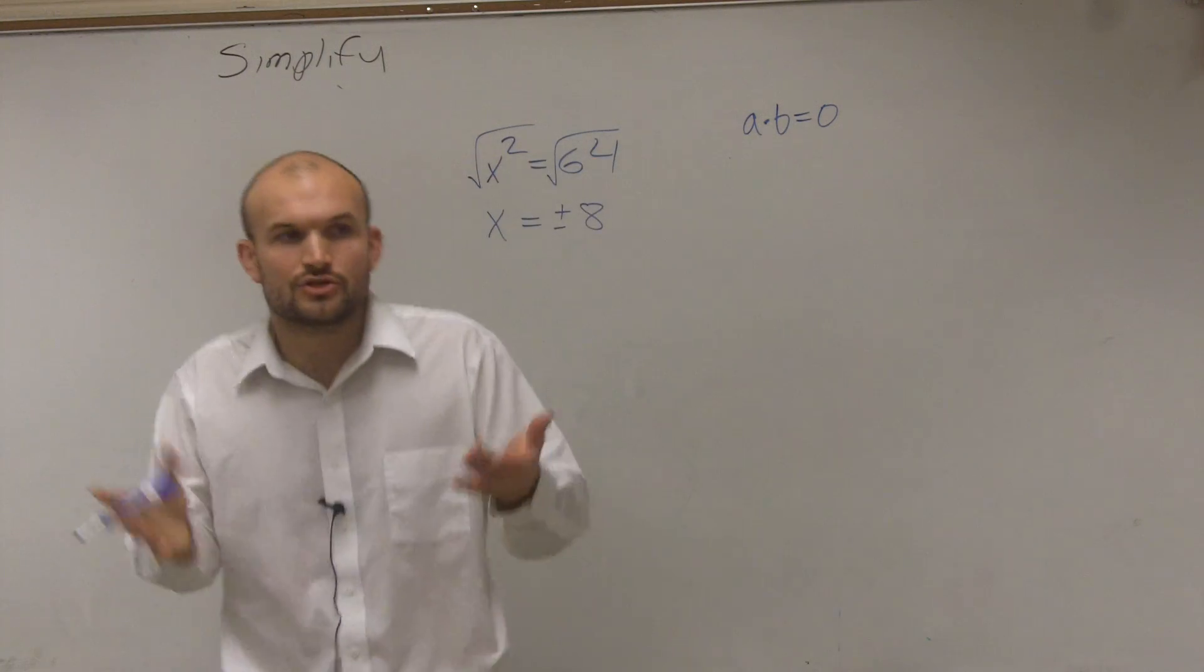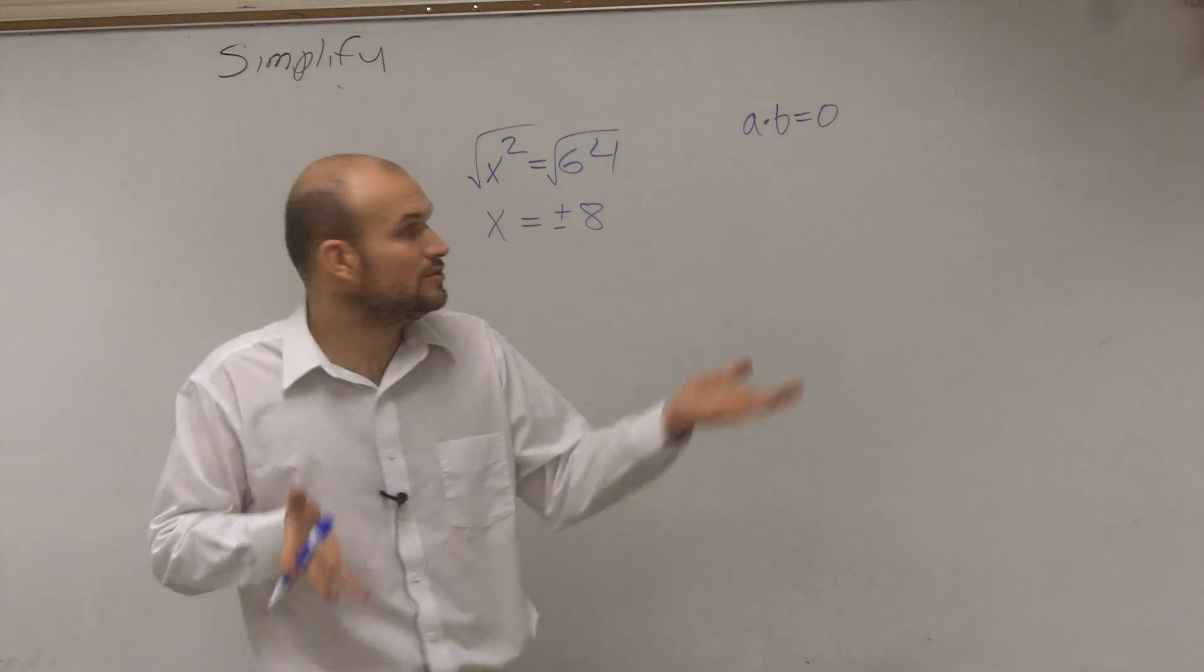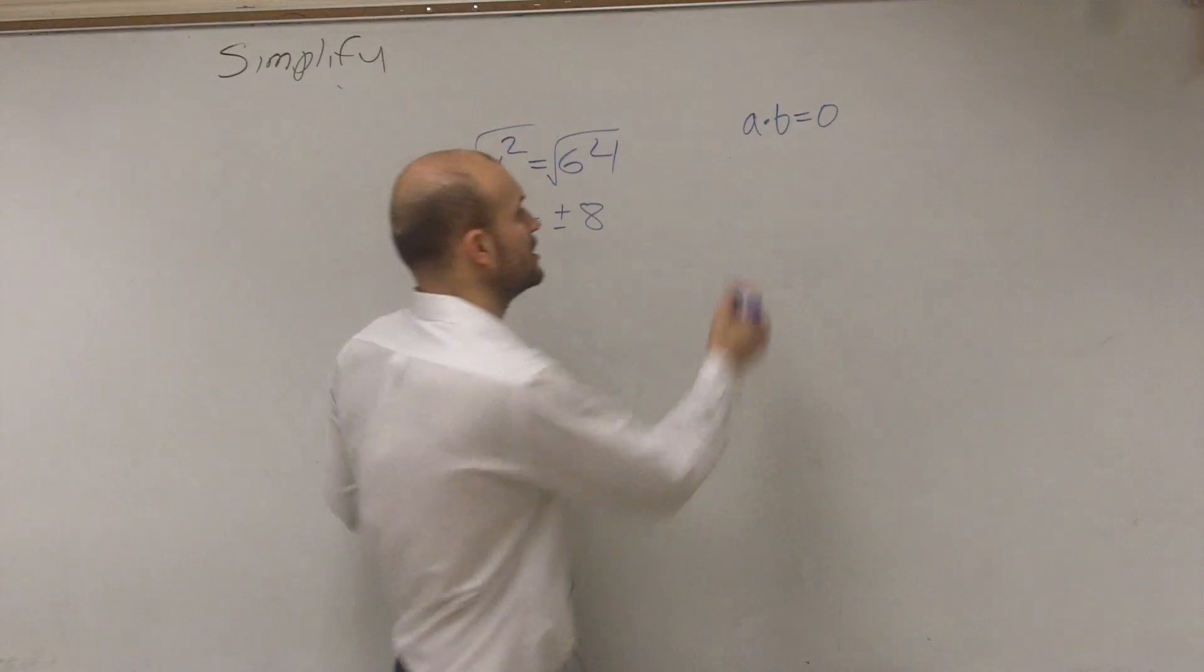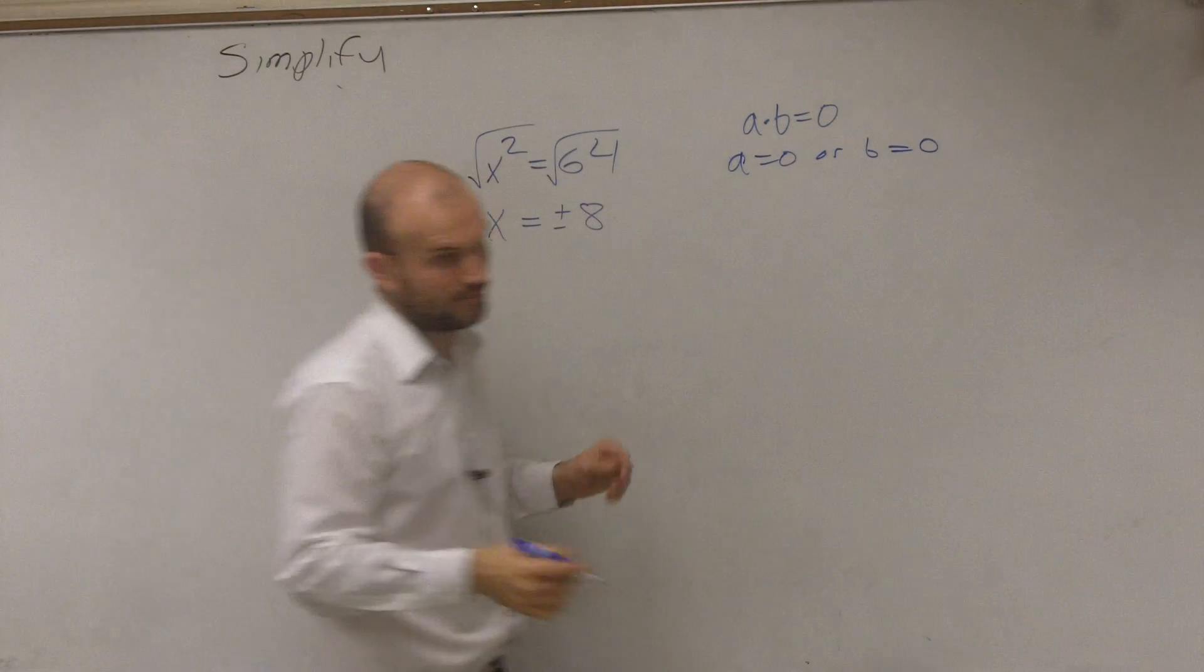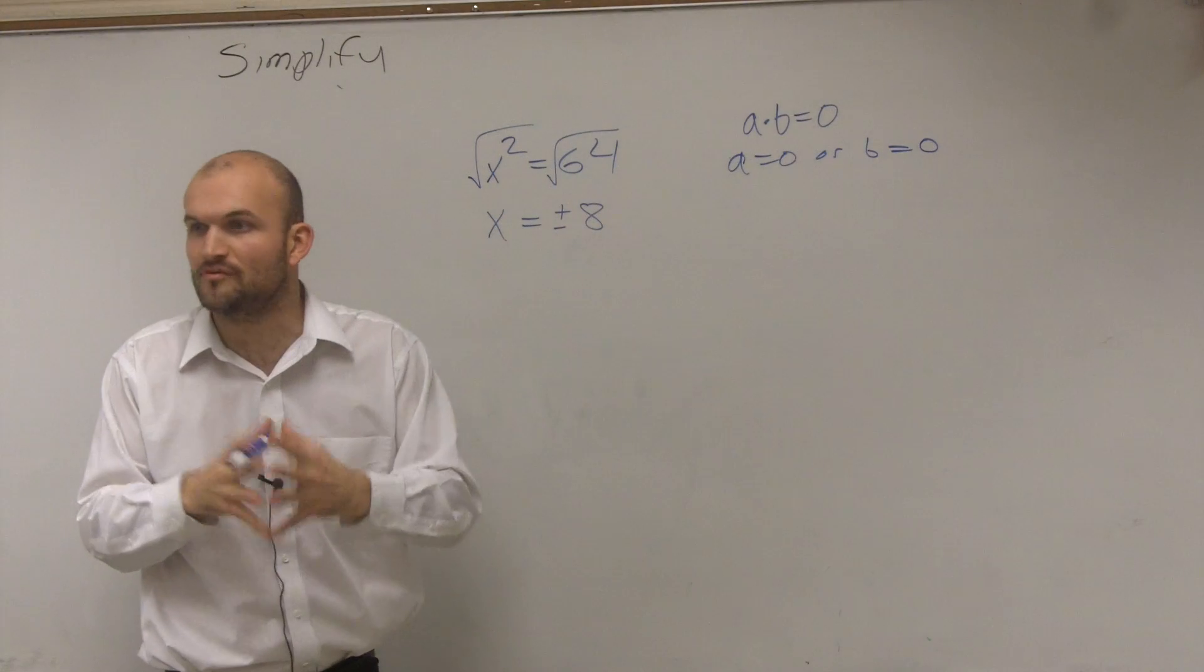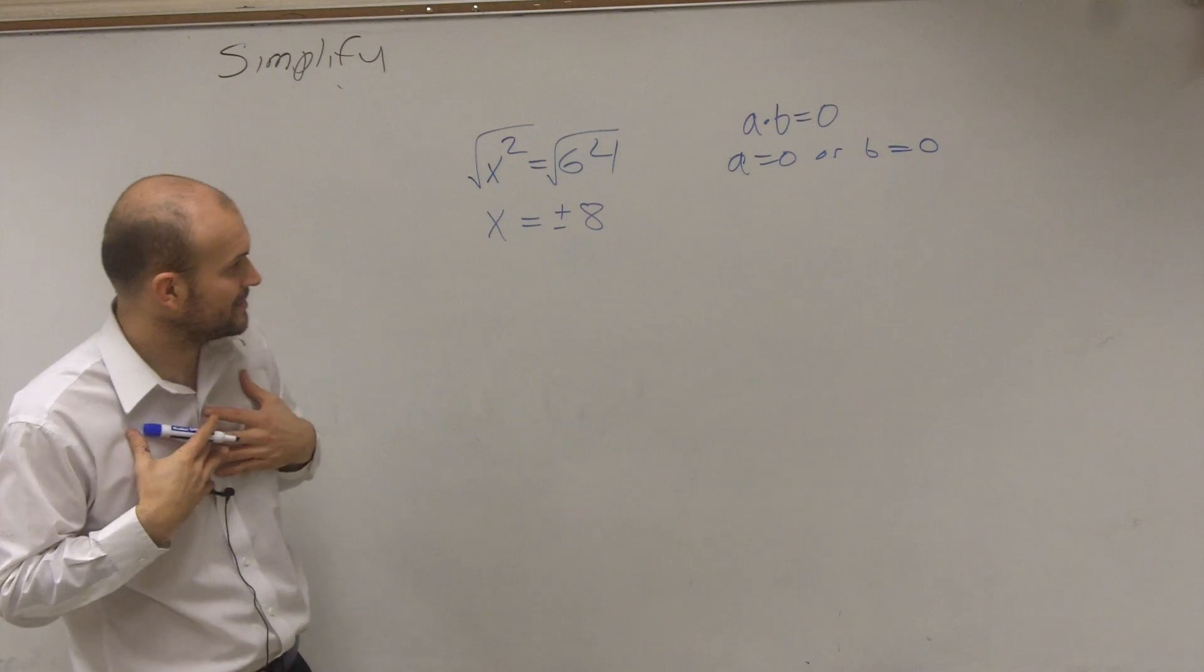When you have two terms, or two numbers multiplied by each other that equals zero, therefore, a equals zero or b equals zero. It's called the zero product property, and it's essential to solve by factoring.